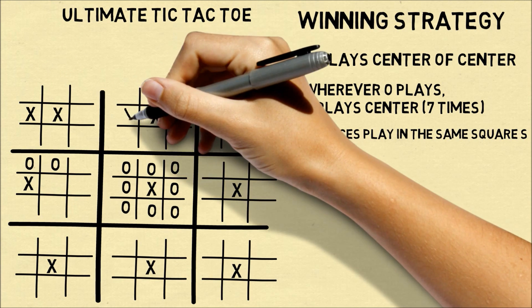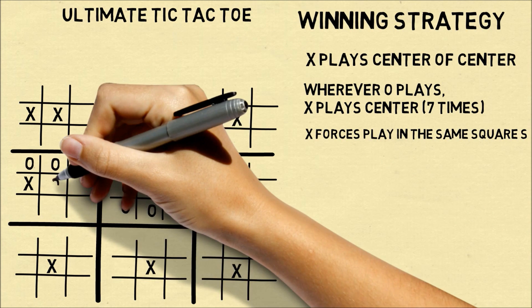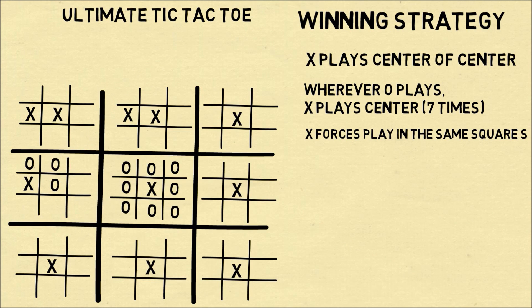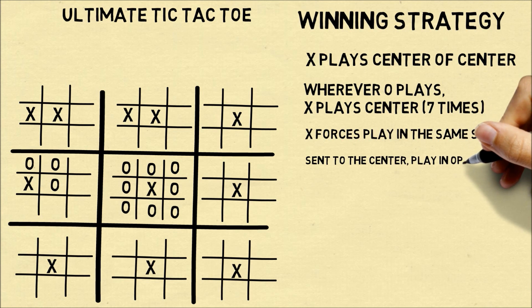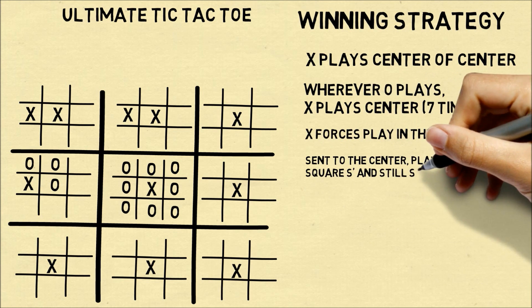So in this case, O should be limited to play in the middle left. Now O may play the center square in this, in which case you should play the opposite square.